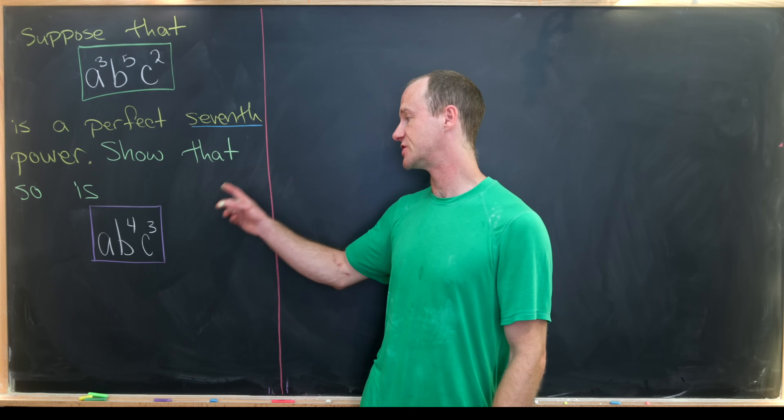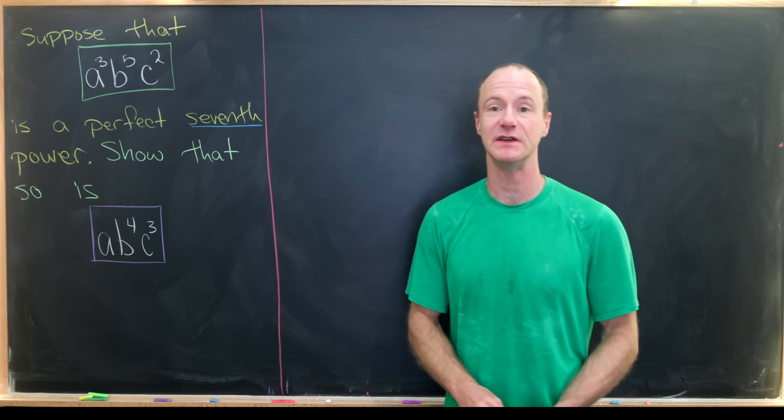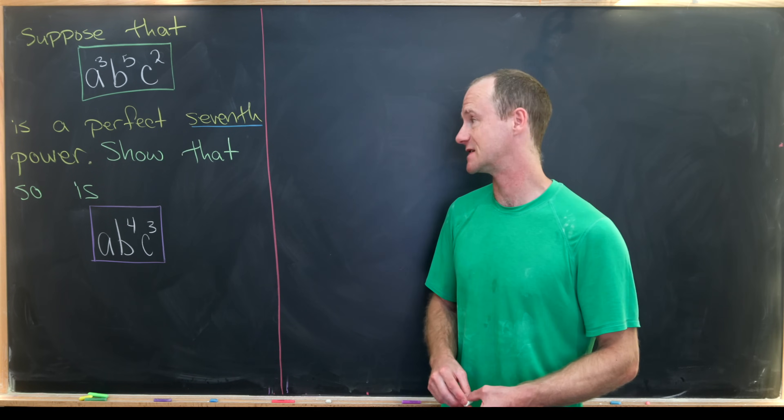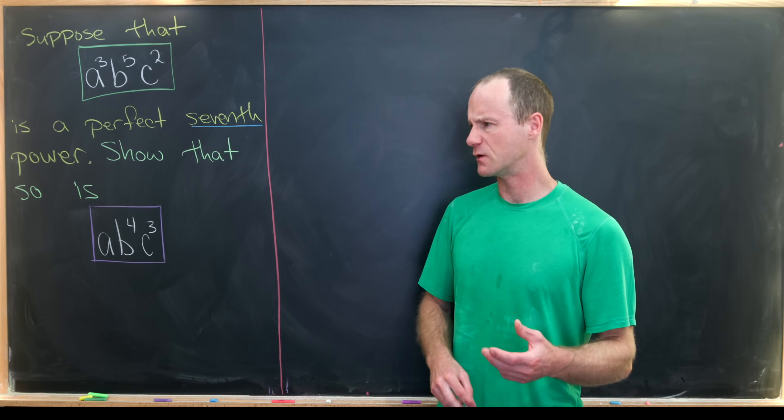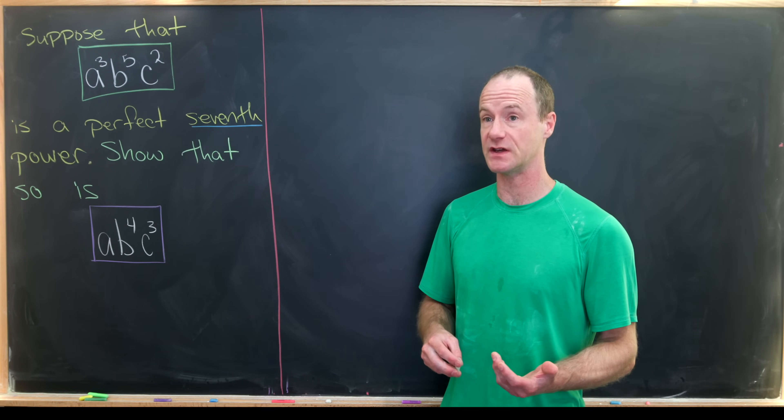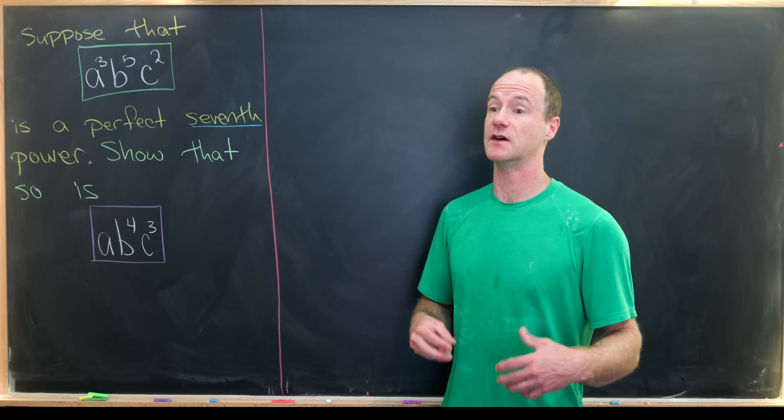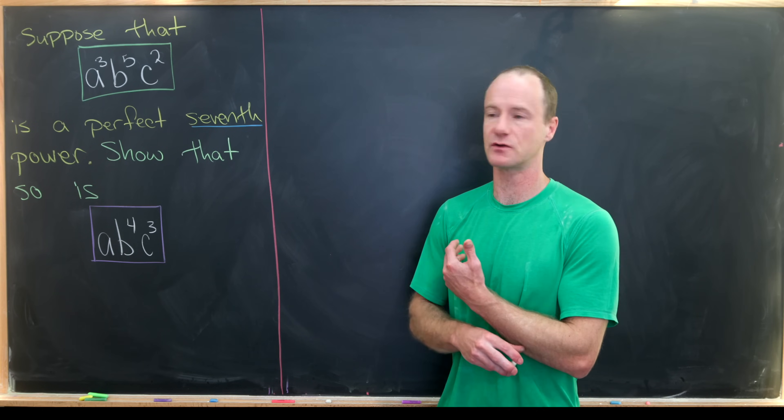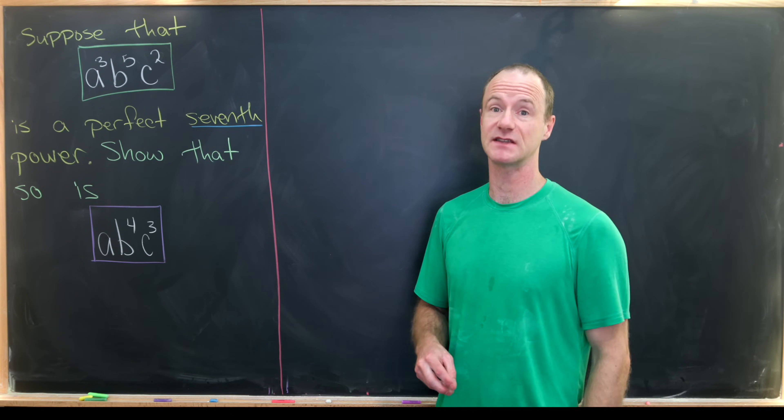And then use that information to show that a times b to the fourth times c cubed is also a perfect seventh power. And really the main tool that we'll use here is the fundamental theorem of arithmetic, as well as the notion of congruence mod seven in this case.